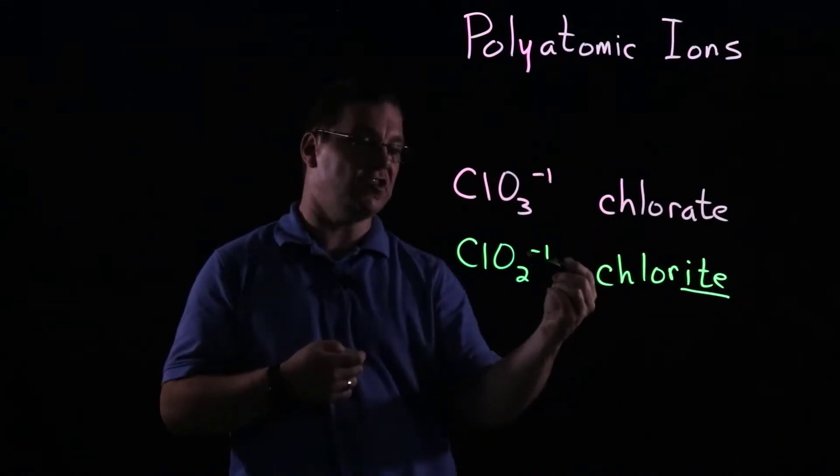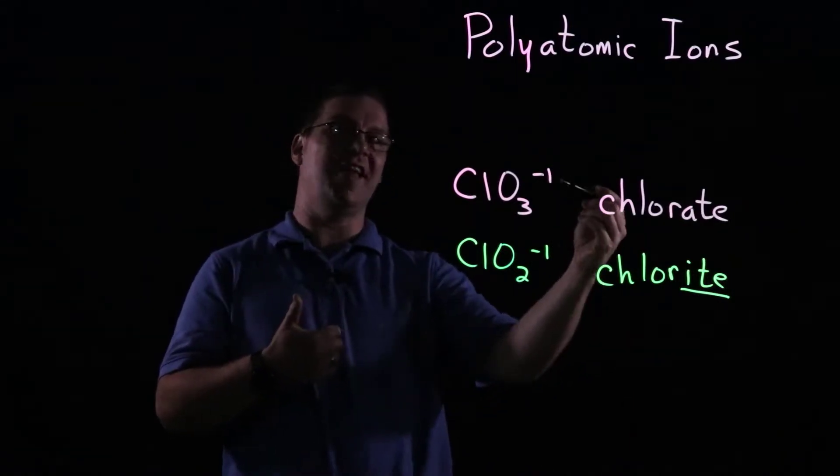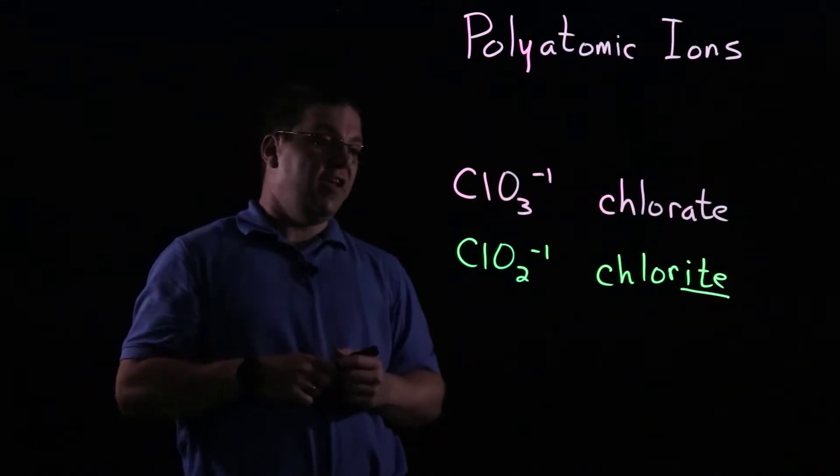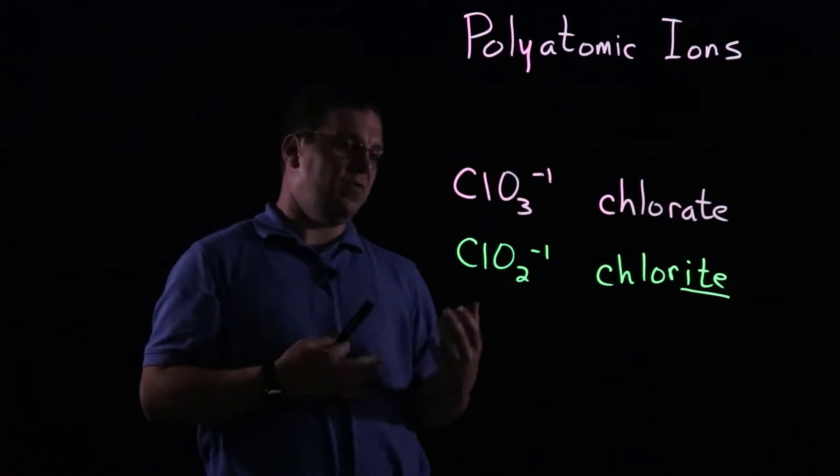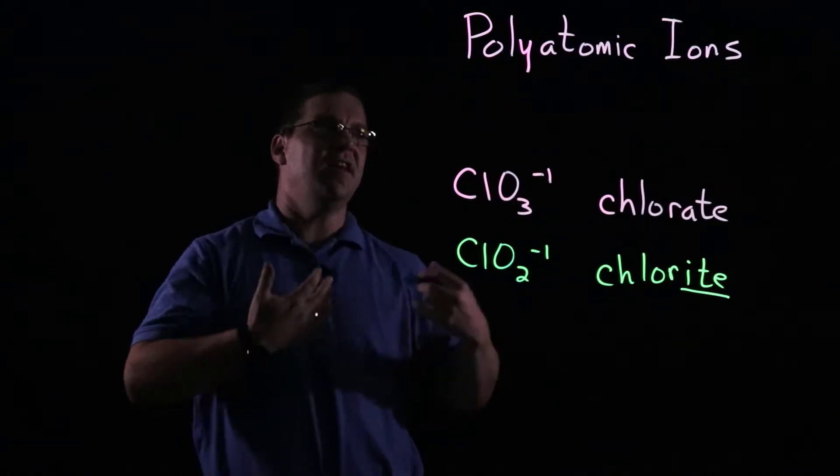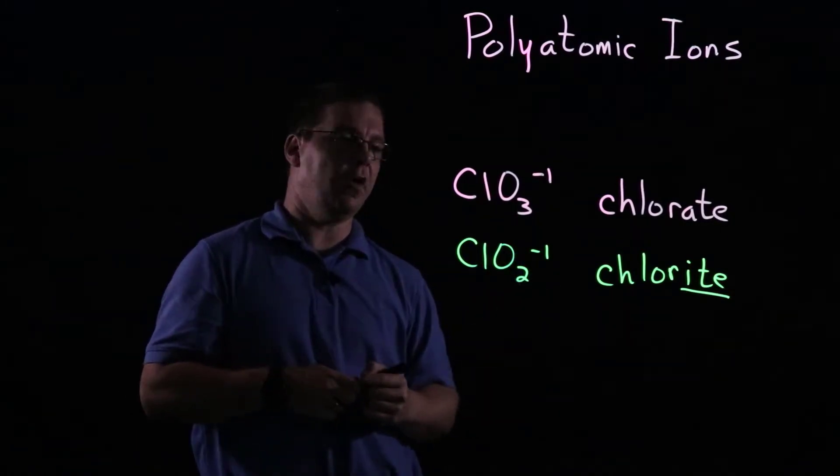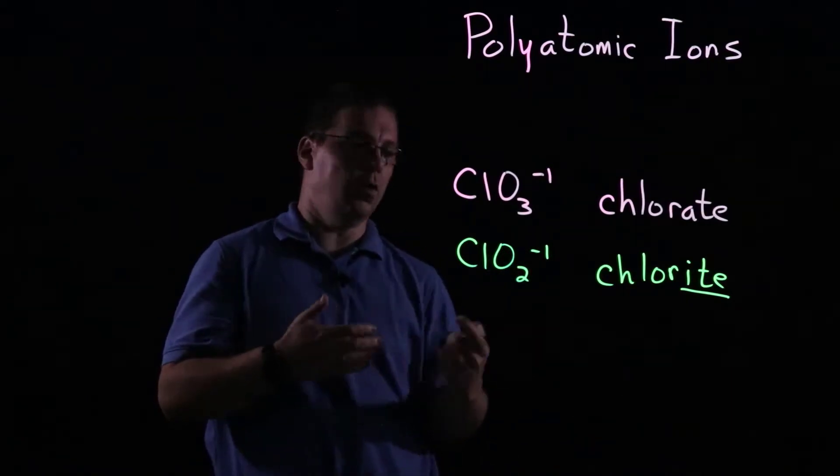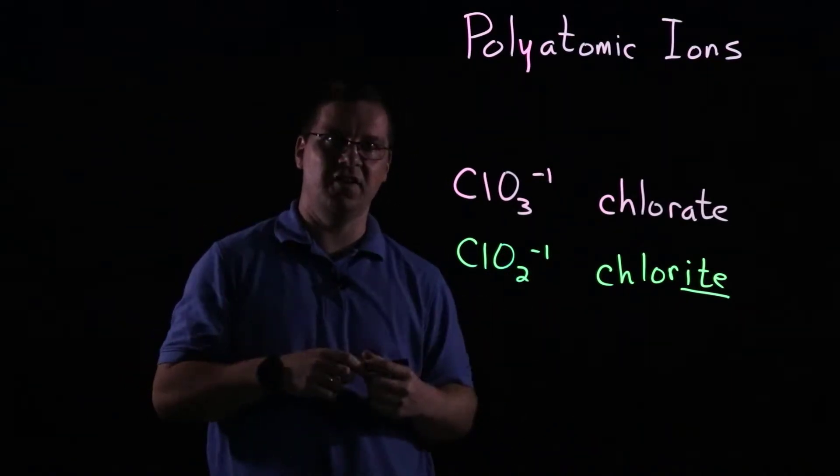And that change is important to notice, but what's staying the same is also important to notice as well. So if we continue, there are other ways that we can modify both the formulas and the names to get yet other polyatomic ions. So in this case we subtracted one oxygen, so there's still two there, why not take another one?